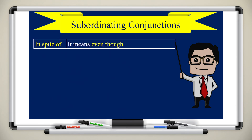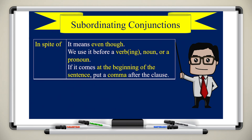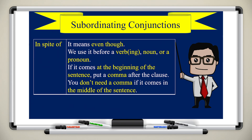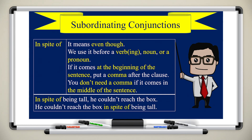'In spite of' means 'even though.' We use it before a verb, noun, or pronoun. If it comes at the beginning of the sentence, put a comma after the clause; you don't need a comma if it comes in the middle. Examples: 'In spite of being tall, he couldn't reach the box.' Or: 'He couldn't reach the box in spite of being tall.' Notice we don't put the comma directly after 'in spite of.'